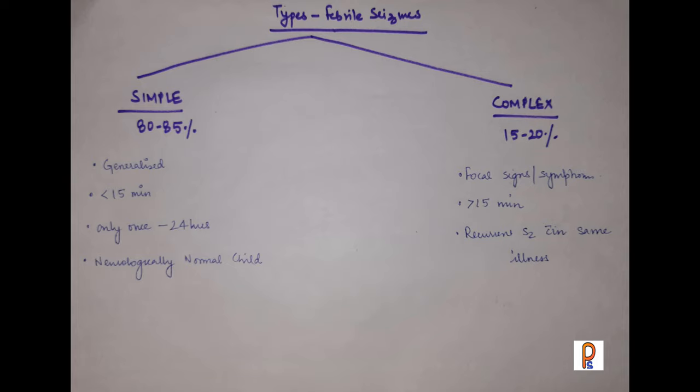When a child has a fever and seizures, we have to determine the type of febrile seizure. Febrile seizures can be simple or complex. 80 to 85% of febrile seizures are simple, and 15 to 20% are complex.